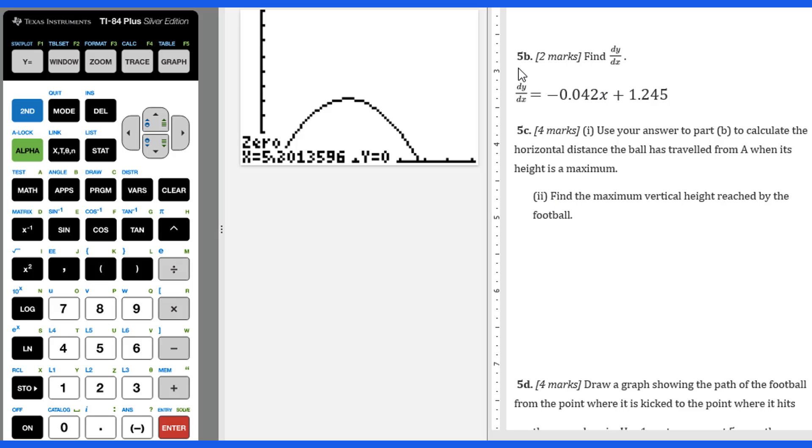Let's go to 5b. We need to figure out dy/dx. Using the power rule of derivative, you will get that negative 0.042x plus 1.245.